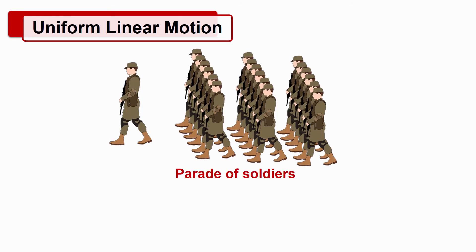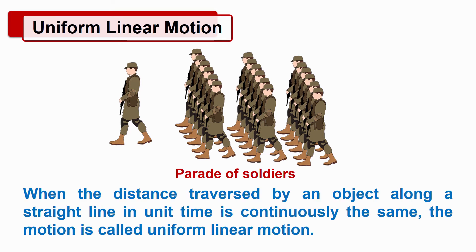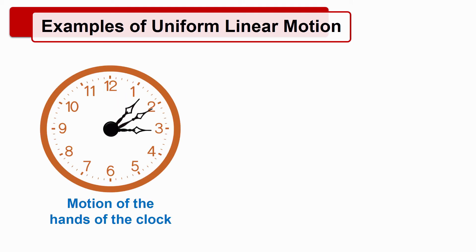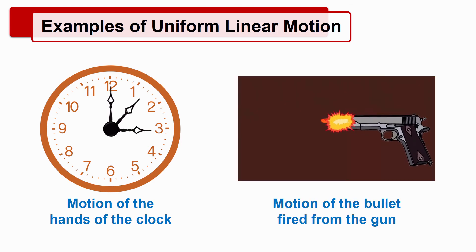The first type of linear motion is uniform linear motion. You might have seen the parade of soldiers on Republic Day or Independence Day. During that parade, we do not see even a slight difference in their motion — such a motion is uniform linear motion. When the distance traversed by an object along a straight line in unit time is continuously the same, the motion is called uniform linear motion. Examples include the motion of the hands of a clock, which cover equal distance in equal intervals of time, and the motion of a bullet when fired from a gun.